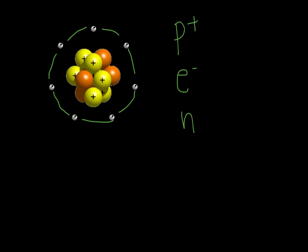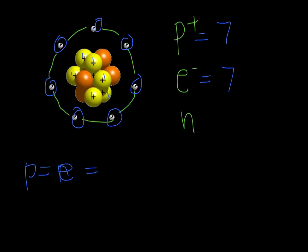Alright, so let's look at this example. In this example, we see the number of positives here. We see one, two, three, four, five, six, seven. There are seven protons in this model. There are one, two, three, four, five, six, seven electrons. And that tells me that because my protons are equal to my electrons, that this is an atom.